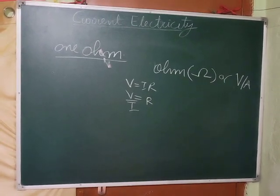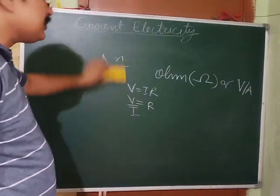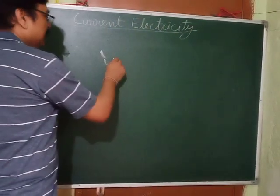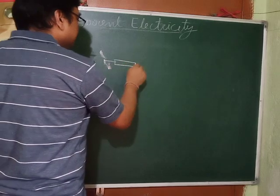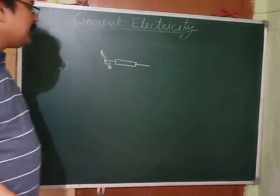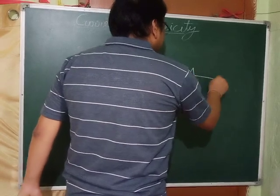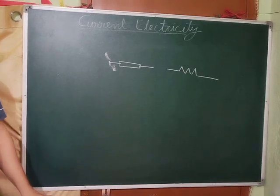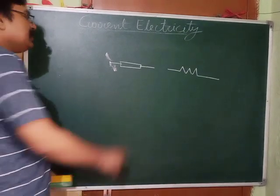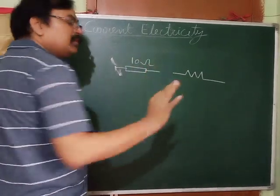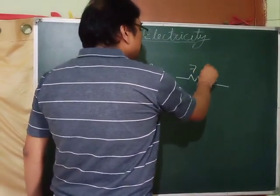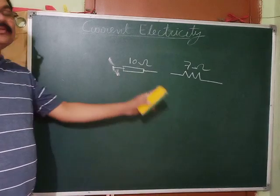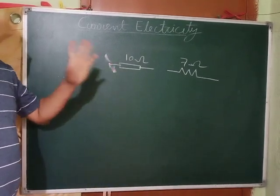Let's discuss circuit symbols. Resistance may be represented in two ways — both are fixed resistances. Fixed resistance means its value — say 10 ohm or 7 ohm — cannot be changed.